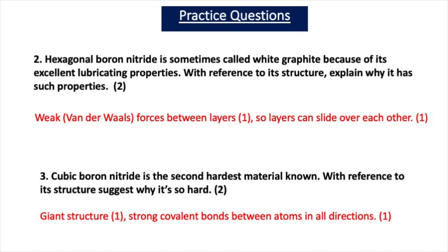Question three says: cubic boron nitride is the second hardest material known. With reference to its structure, suggest why it's so hard. If you said it has a giant structure, you get one mark. If you said there are strong covalent bonds between atoms in all directions, you get the second mark.